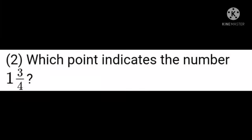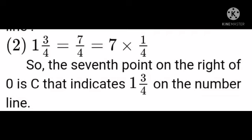Question 2: Which point indicates the number 1 3/4? Look at the number line. 1 3/4 equals (4 × 1 + 3)/4, which equals 7/4, which equals 7 × (1/4). Since 1/4 represents 4 equal parts, the 7th point on the right of 0 is C, which indicates 1 3/4 on the number line.